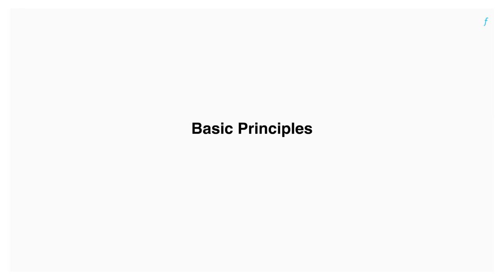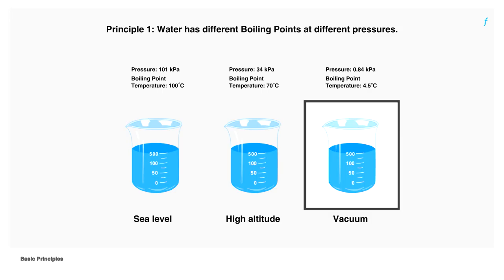Before we learn the working of an absorption chiller, here are three basic principles which we have to understand. Water boils at different temperatures under different pressures. At atmospheric pressure, water boils at 100 degrees Celsius. At lower pressures, it boils at lower temperatures. Following the same principle, at vacuum or at extremely low pressures, water evaporates without any external heat energy input.